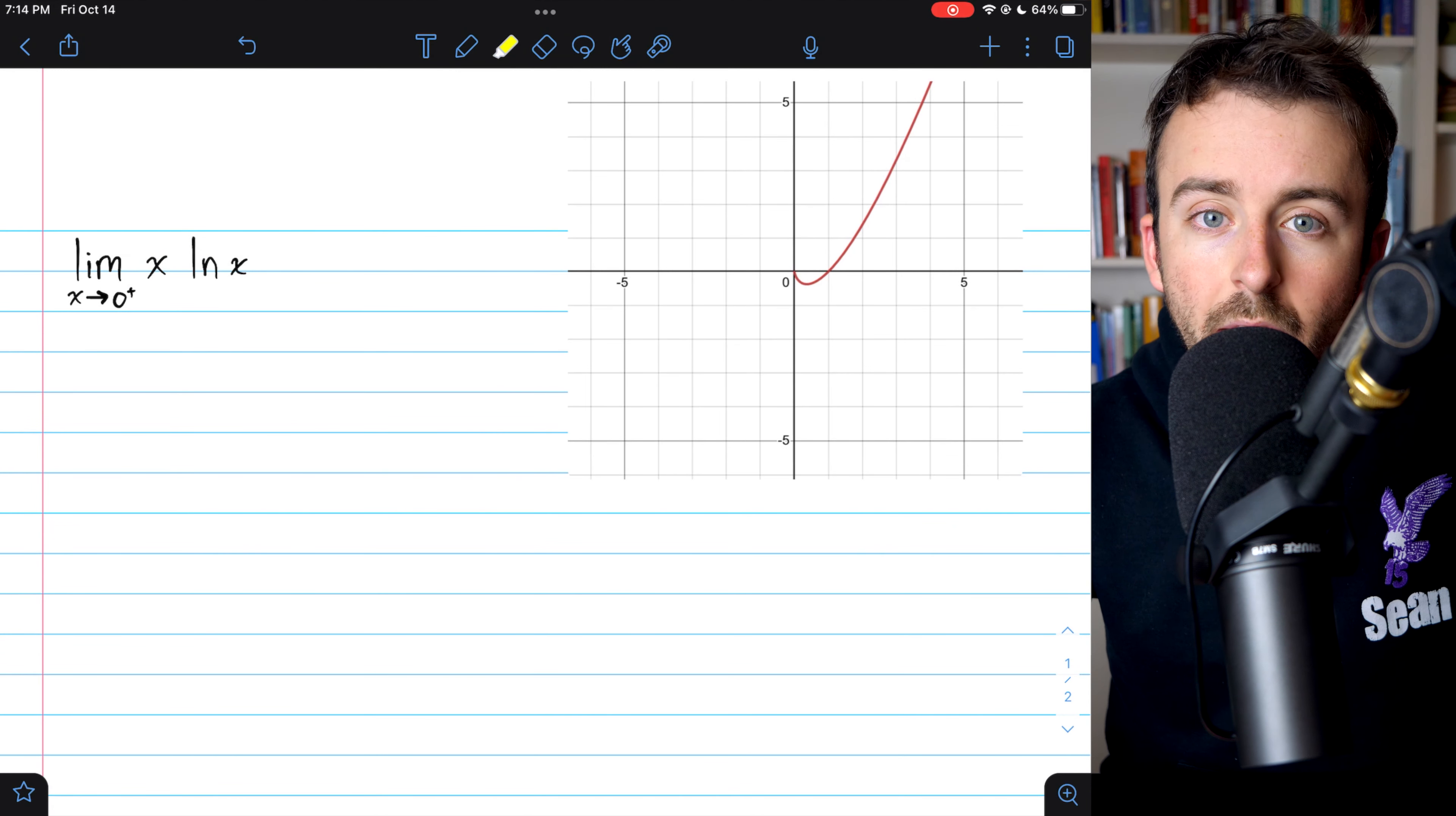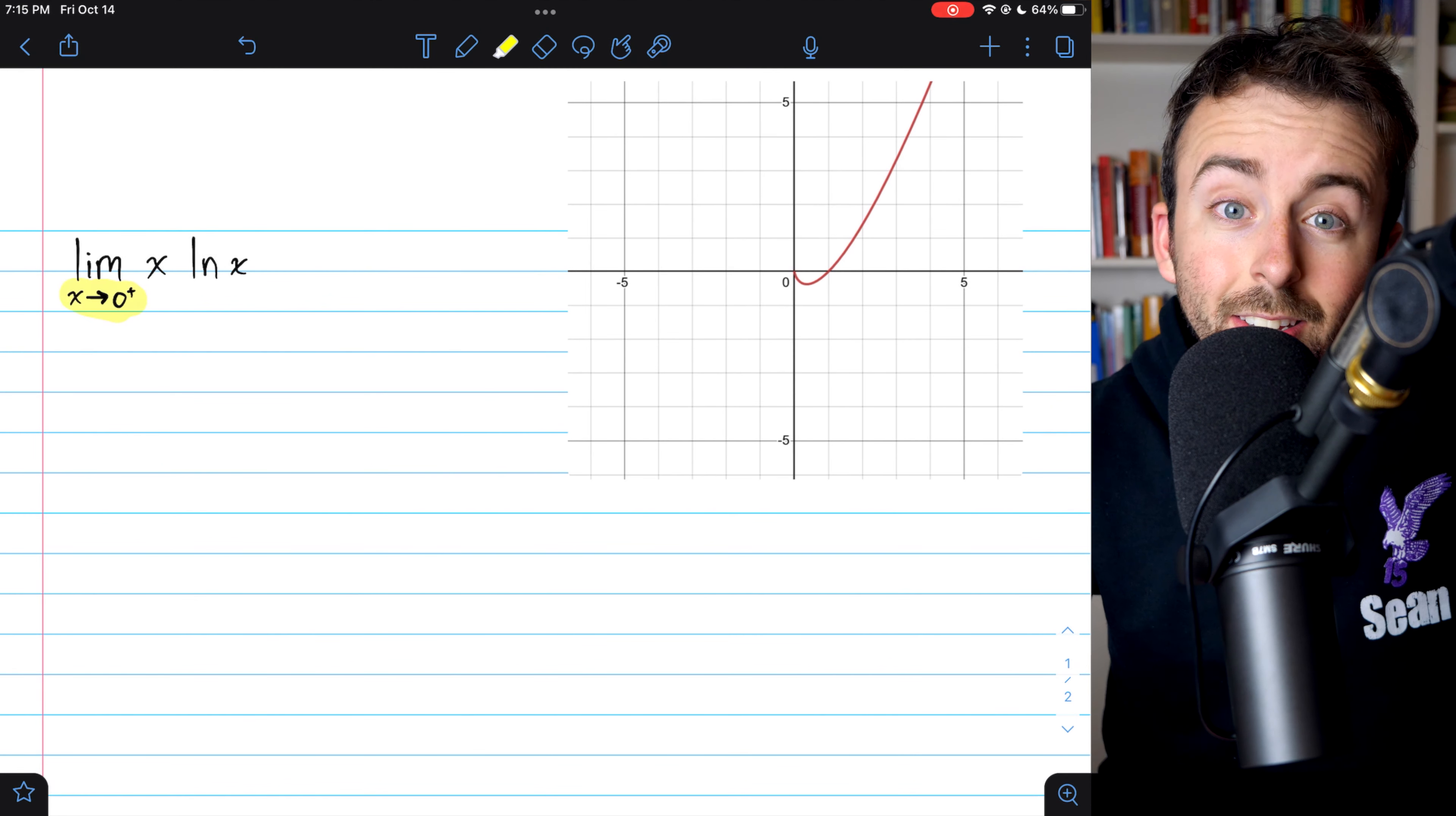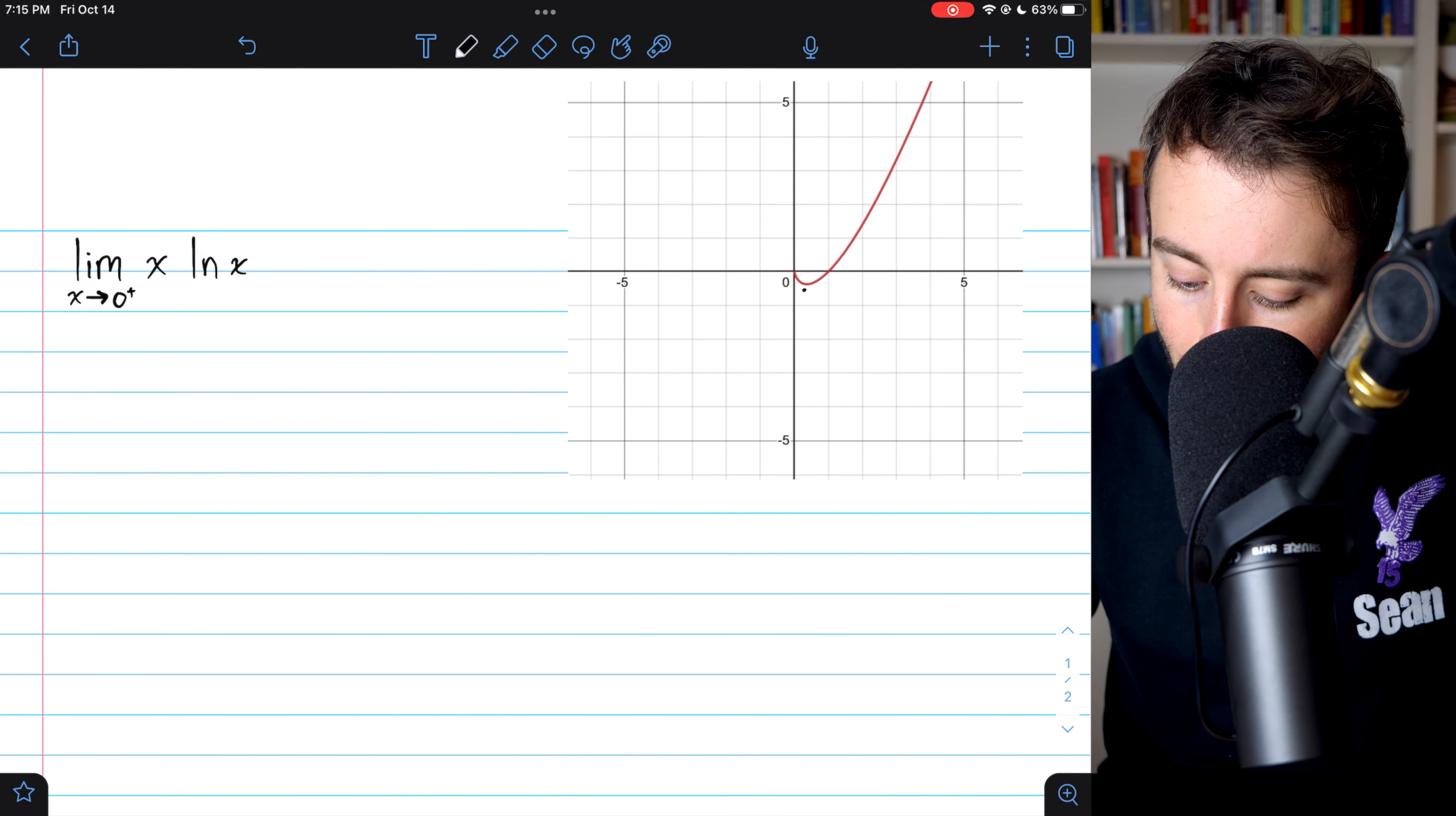Natural log is also undefined at zero, but that doesn't stop us from approaching zero. Here is a graph of the function. As you might be able to guess, our limit is going to end up being zero.